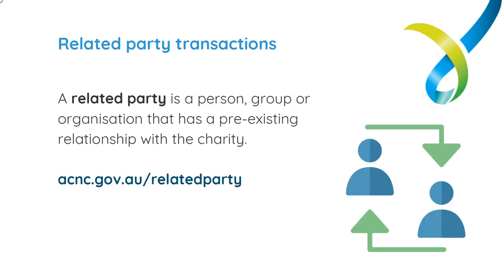A potential conflict of interest is where there's a possibility that a person could be influenced by a conflicting or competing interest. For example, John, a responsible person at Charity A, takes on a professional role with Charity B, which provides similar services to Charity A. Charity B has IT issues and John is asked to oversee a contract to sort them out. On the surface this may not be a massive red flag, but John's knowledge of Charity B's infrastructure could lead to a conflict with his role at Charity A. There's a potential for this situation to lead to a conflict — it could turn into an actual conflict quickly, so it needs to be identified and addressed.